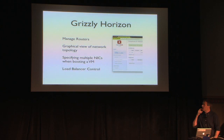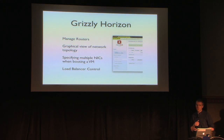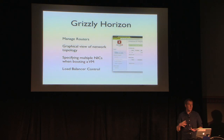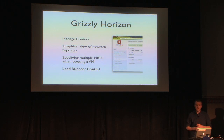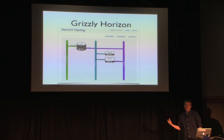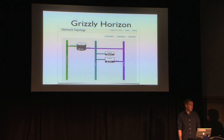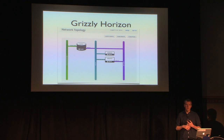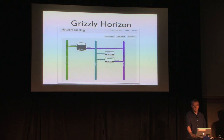Other things we also worked on during Grizzly is improvement in Horizon. There's a core team member who is core in both Horizon and Quantum who worked to bridge and improve coverage gaps. We improved the ability to manage routers within the Horizon interface, give a graphical view of the topology, specifying multiple NICs when booting a VM, and load balancer control. This topology map really gives you a clear view in one shot to understand what's going on in a tenant.